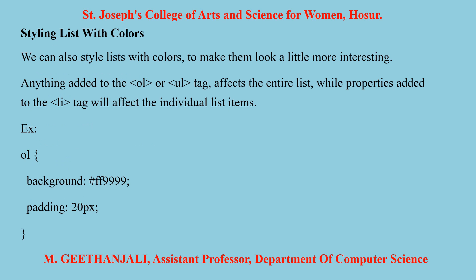The next topic is styling a list with colors to make it more interesting. You can add the OL or UL tag with effective styles. For the properties, you can add list items with color. For example, for OL, the background color is given — you can provide a color code or use a color name like red or purple. Then you also provide a pixel value for padding.